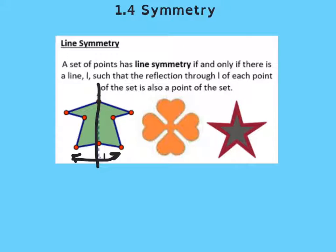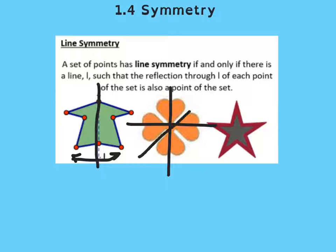So for instance, that second shape — you could put a line here and it would map onto itself. You could also do one here and it would work. This would work and so would this. So that particular shape has many lines of symmetry.